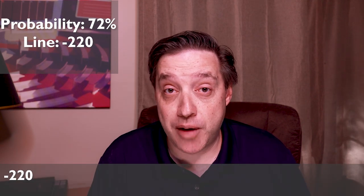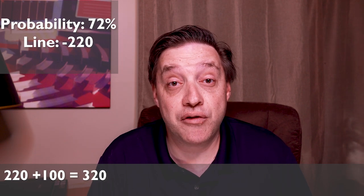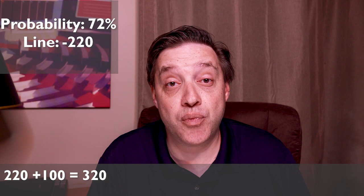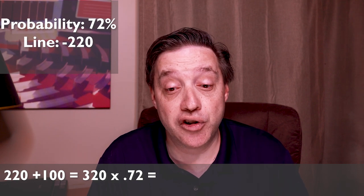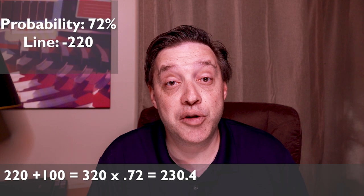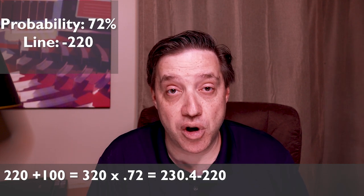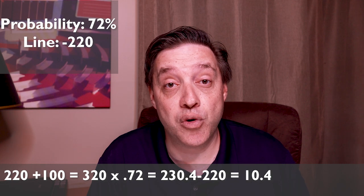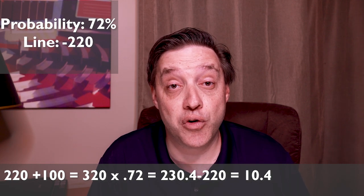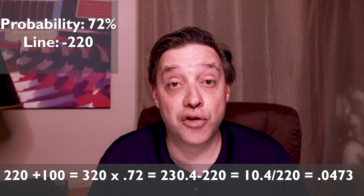That may have seemed like a lot of steps, but it's really not that bad. Let's use an example where you have the edge. Let's say that your model predicts that a team has a 72% chance to win a game, and you find them priced at minus 220. What's your edge? Well, we take minus 220, we drop the minus sign, and we add 100. Now we have 320. We multiply that by 0.72, which is your probability — 72% — and we get 230.4. Now we subtract out the odds, 220, and we get 10.4. Now we divide that 10.4 by 220, and we get 0.0473. This means that your edge on this wager is 4.73%.